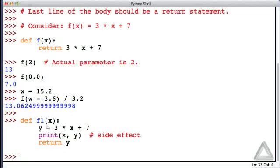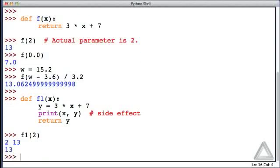Hitting return twice, we get the interactive prompt back, and let's say f1 with an argument of 2. Well, now we see one line of output that is from the print statement—that's 2, space, and then 13, so that's telling us the value of x and then the value of that expression.